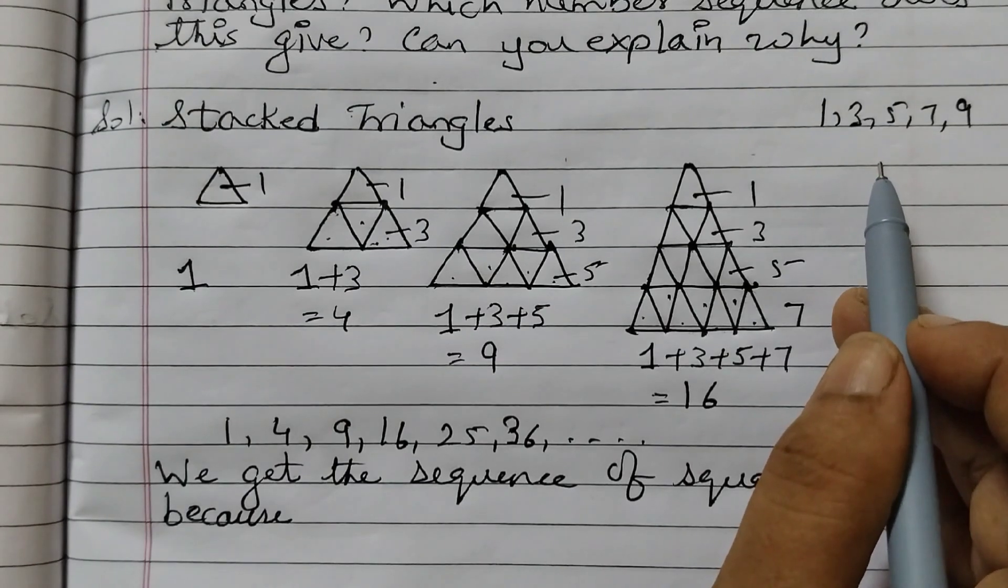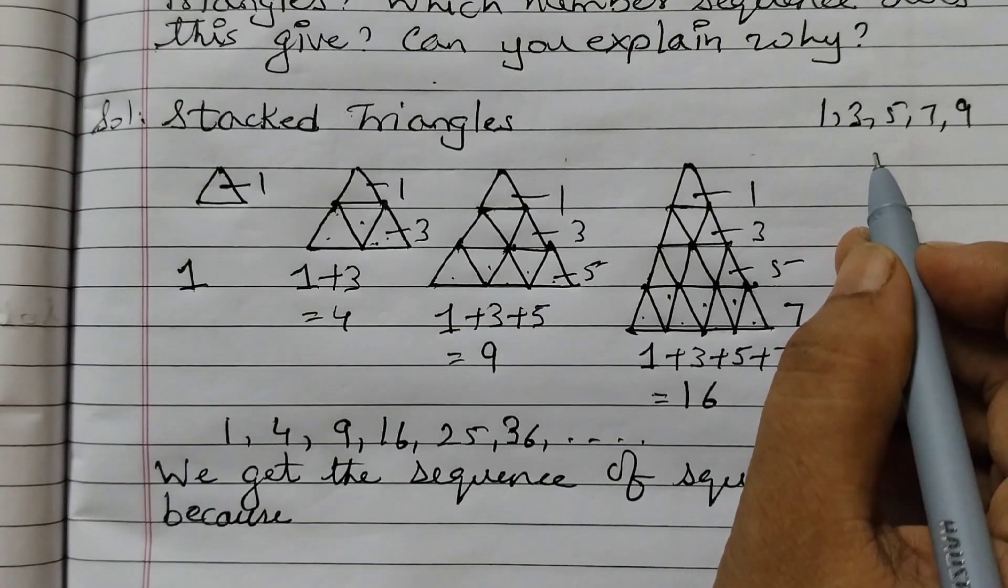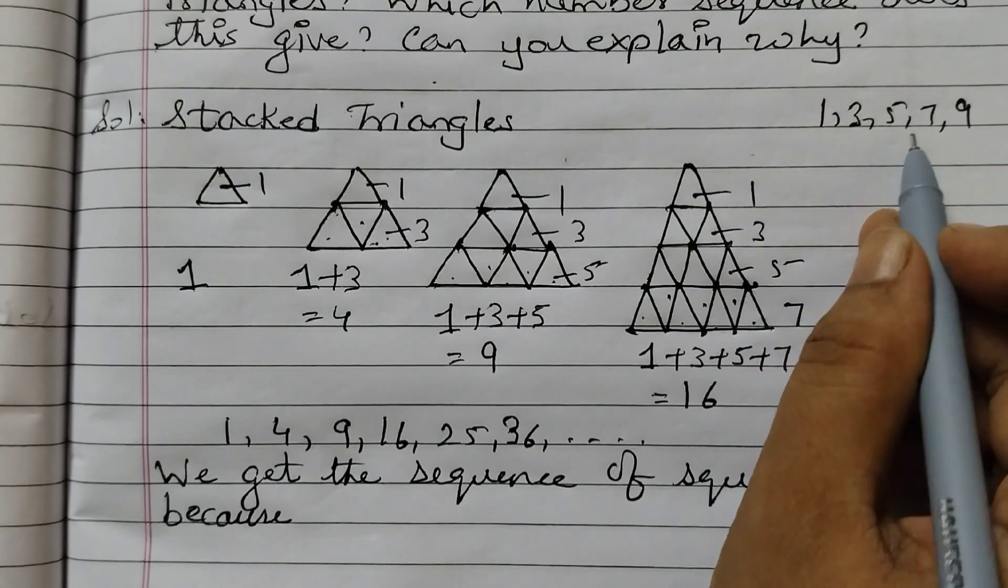And this we have learned in 1.4 relations among number sequences. If you see my introduction video, the first example which is given in your textbook of 1.4 relations among number sequences, that has been discussed, and that is about adding odd numbers starting from 1.